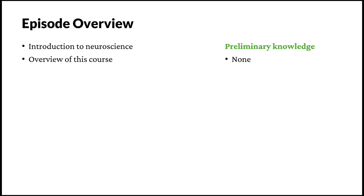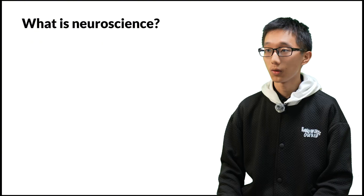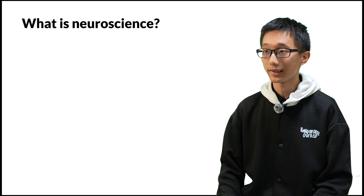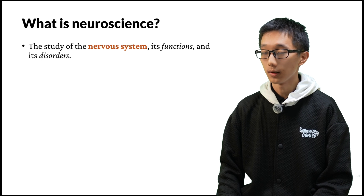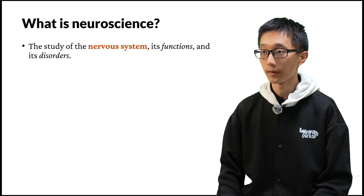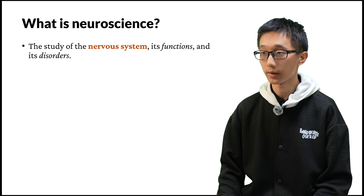First, we're going to know about what exactly is neuroscience. Neuroscience is the study of the nervous system, its functions, and its disorders.